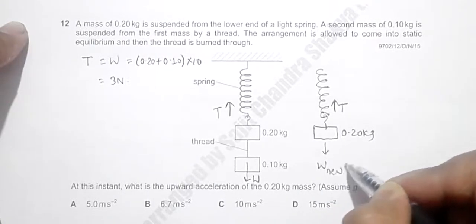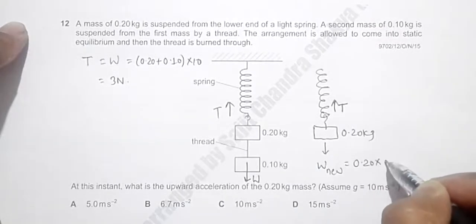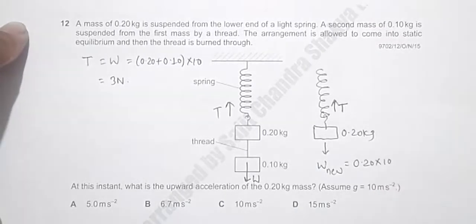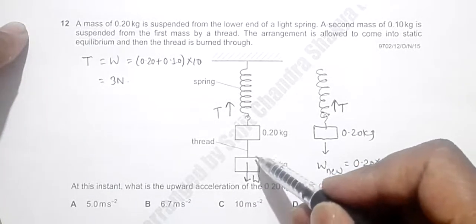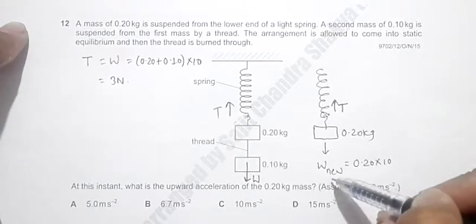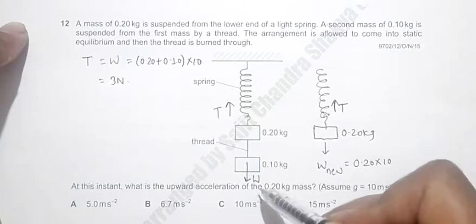And the new weight, W_new, is simply equal to 0.20 into g, that's equal to 2 Newton. Now since this mass is absent, W_new should be less than the previous W, it should be less than this T.